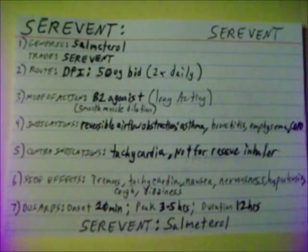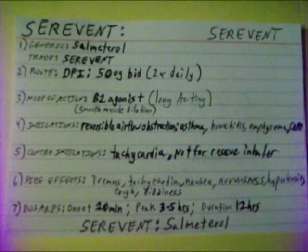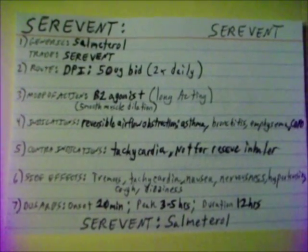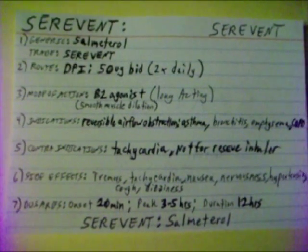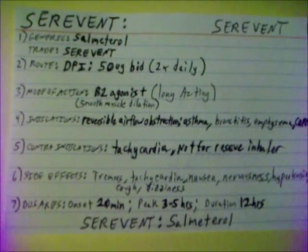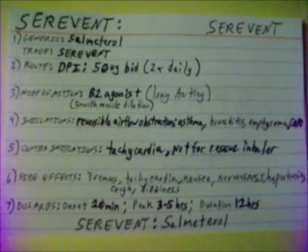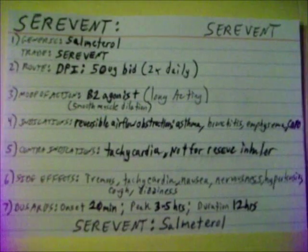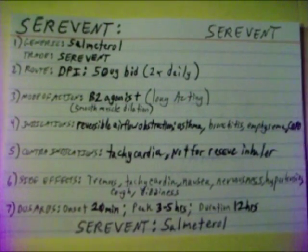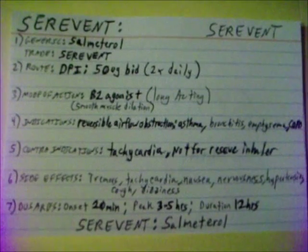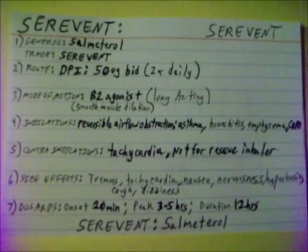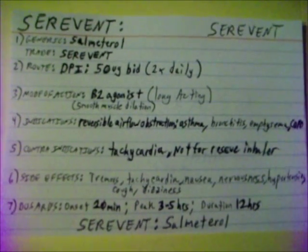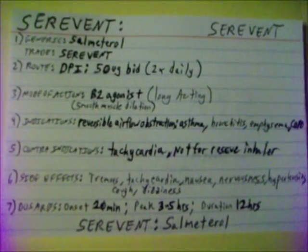Contraindications for Serevent: pre-existing tachycardia and not for use as a rescue inhaler. Side effects are tremors, tachycardia, nausea, nervousness, hypertension, cough, and dizziness. Serevent's onset is 20 minutes, peaks at 3 to 5 hours, and duration is 12 hours.